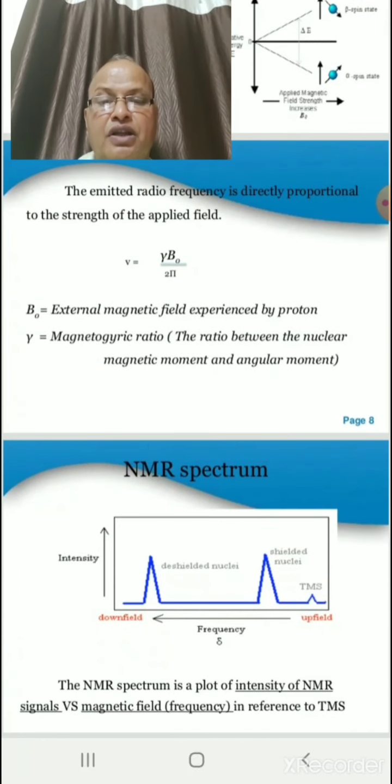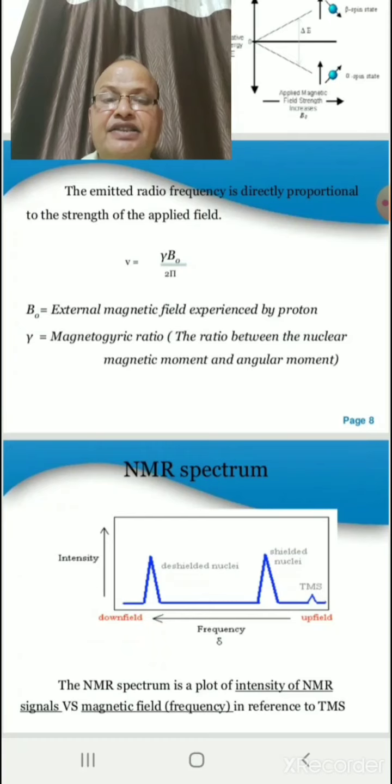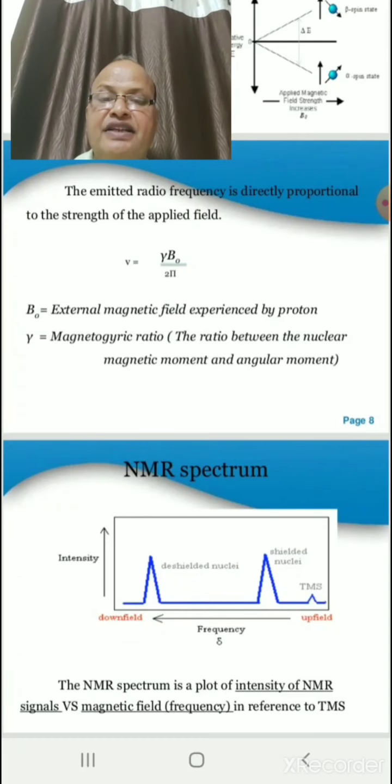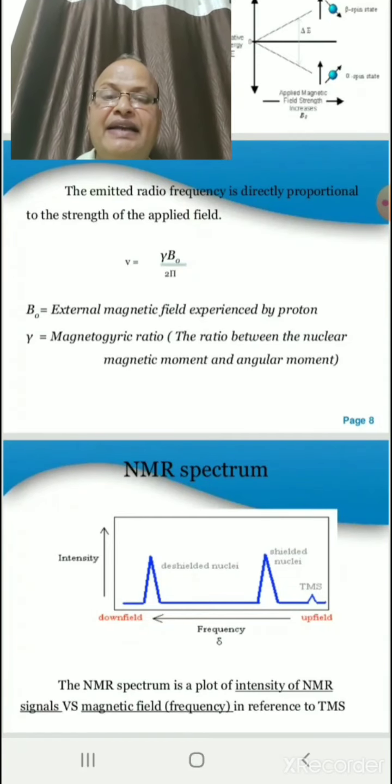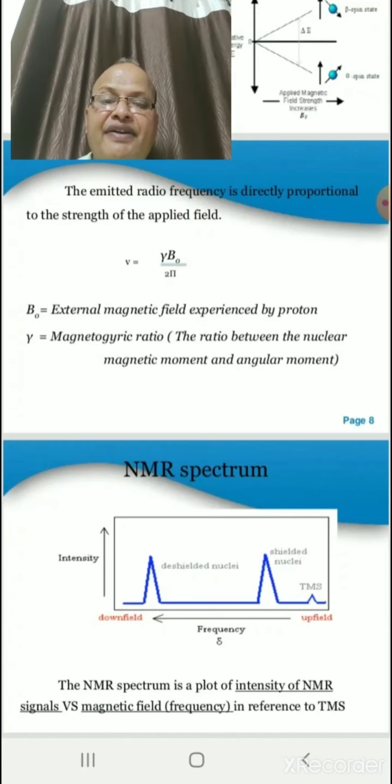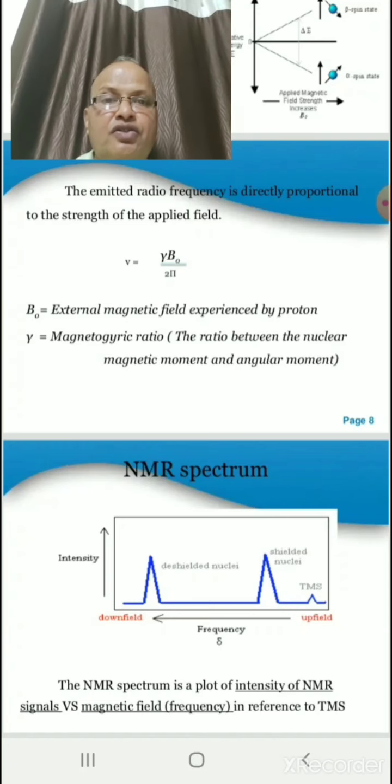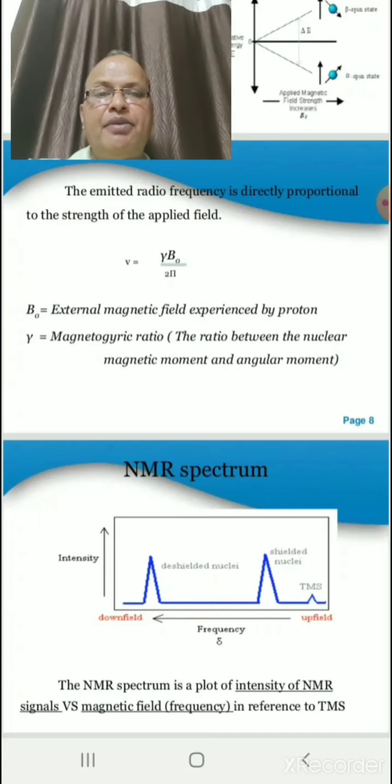This can easily be shown by the downfield and upfield of the molecules. The NMR spectrum is a plot of intensity of NMR signals versus the magnetic field frequency in reference to TMS.